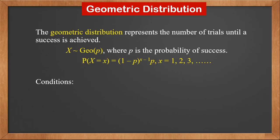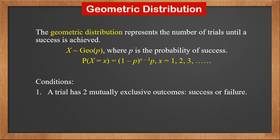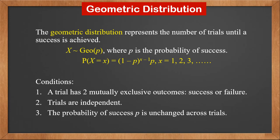There are some conditions that geometric distribution has to meet. First, a trial has two mutually exclusive outcomes: success or failure, and their probabilities add to 1. Second, trials are independent, so that we can multiply their probabilities together. Third, the probability of success p is unchanged across trials. If these three conditions are met, we can model a practical situation with the geometric distribution.